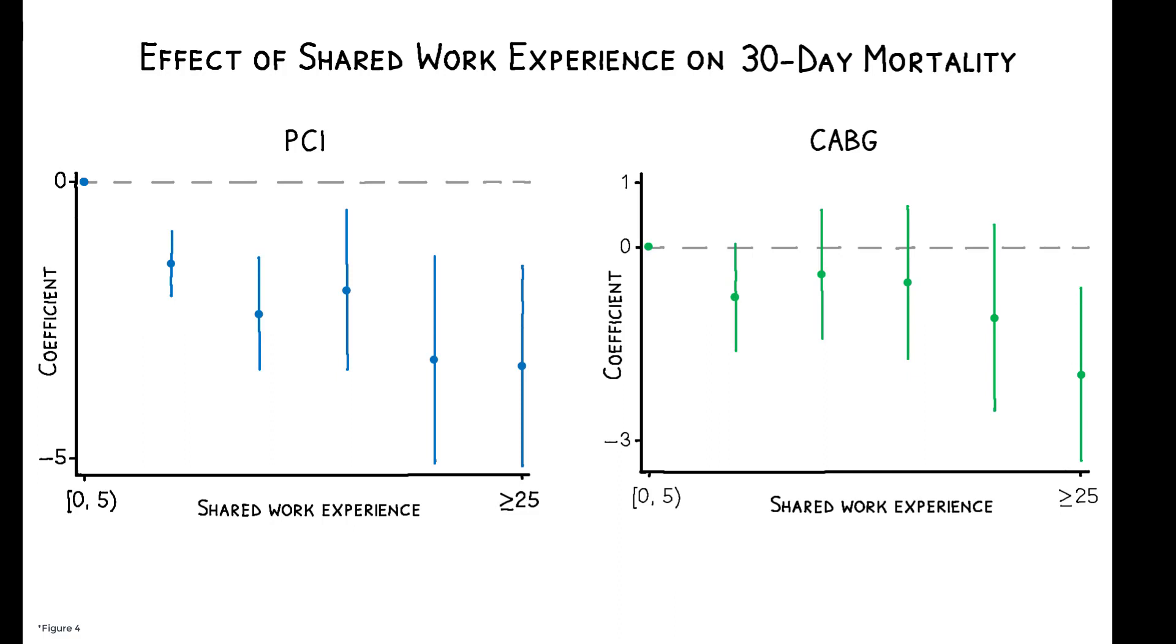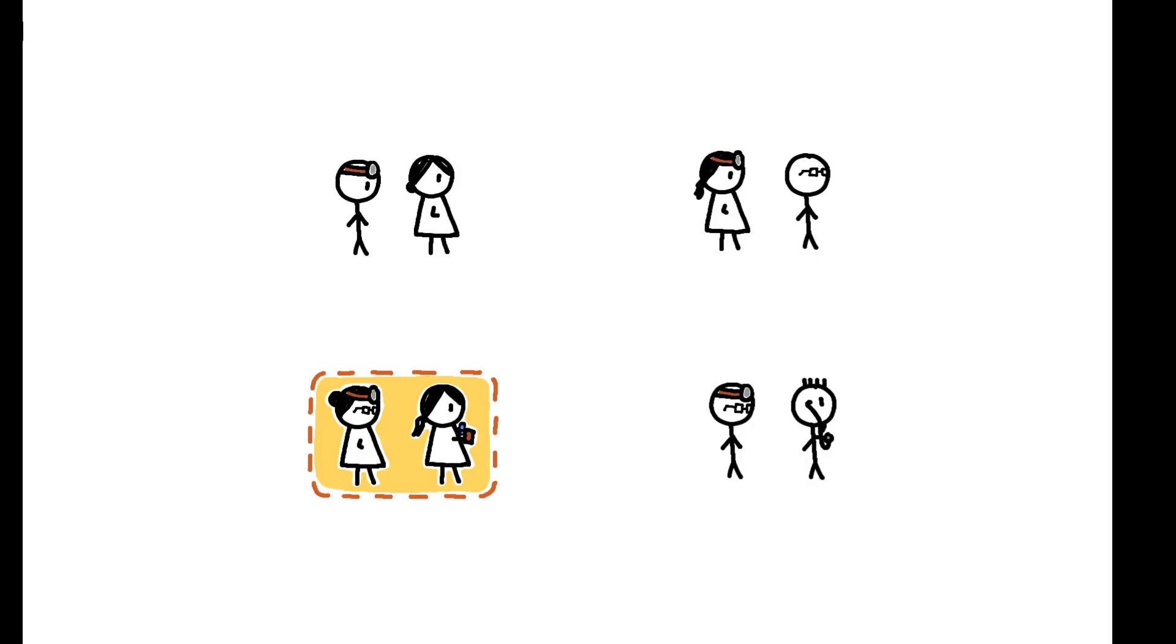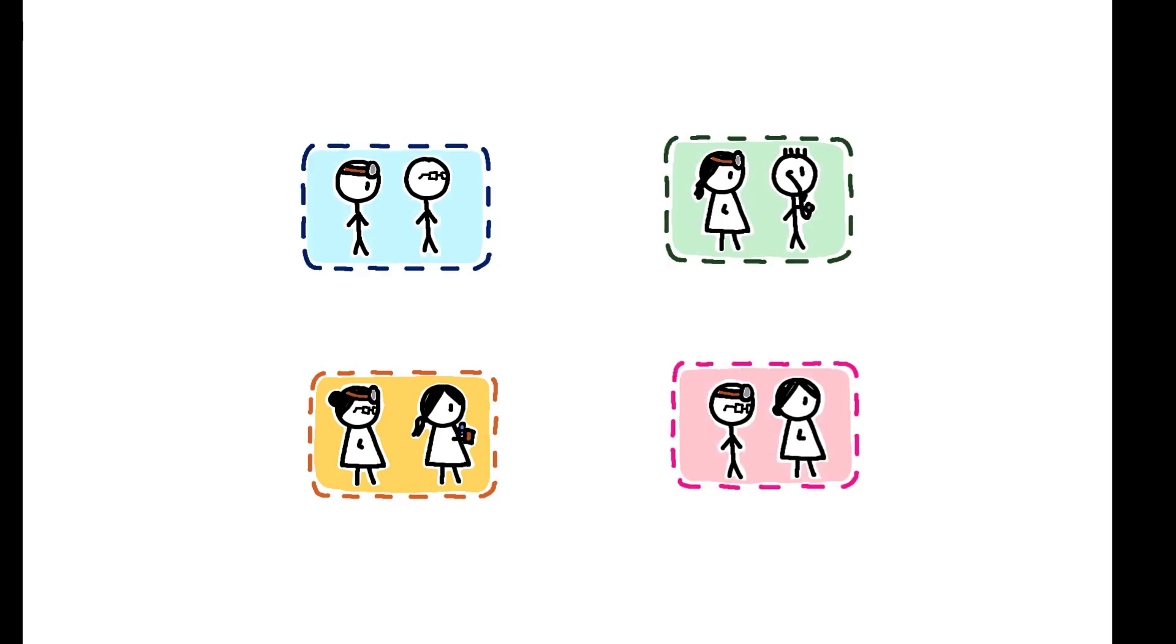The magnitudes suggest that a one standard deviation increase in doctors' shared work experience reduces patient mortality rates by 10-14%. This implies that merely reorganizing doctor teams with an eye to their collaboration histories can significantly improve patient survival.